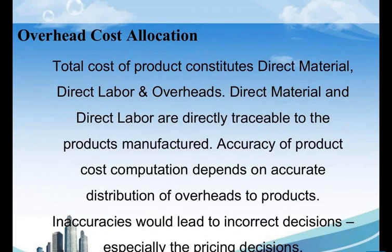We also have overhead allocations. The total cost of a product constitutes direct material, direct labor, and overheads. Direct material and direct labor are directly traceable to the products manufactured. In order to find the total cost of a product we need to add direct material, direct labor, and other overheads.